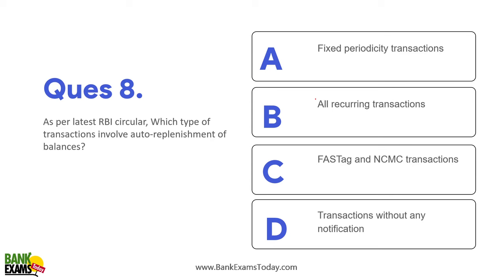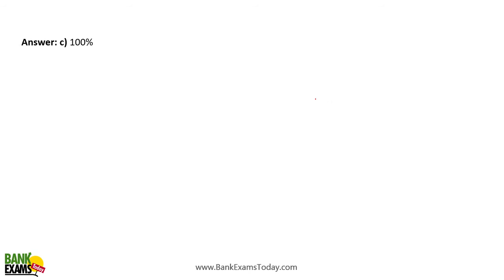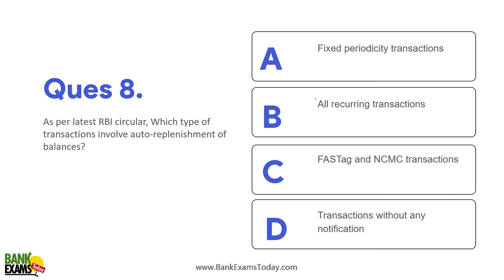As per the latest RBI circular, which type of transaction involves auto replenishment of balances? These are recurring transactions — for example, FASTag and NMC transactions. In FASTag, the balance is auto-credited into the account, and you will not receive an auto-debit message for these transactions.